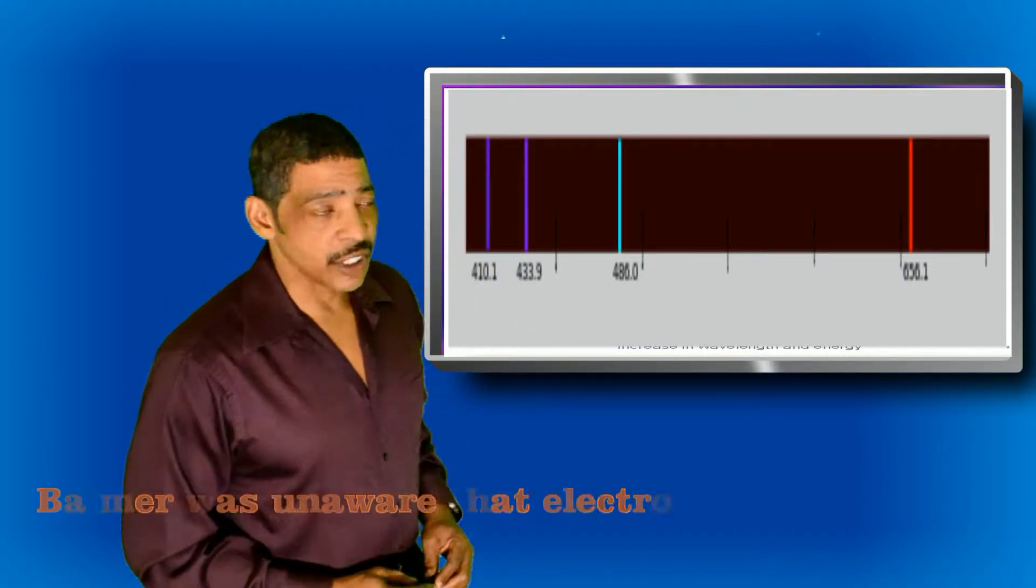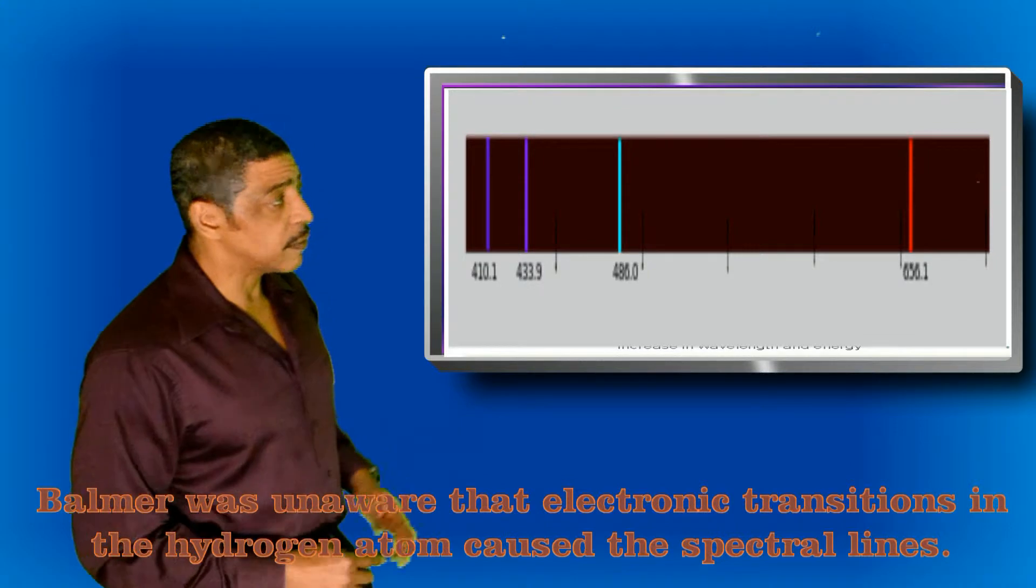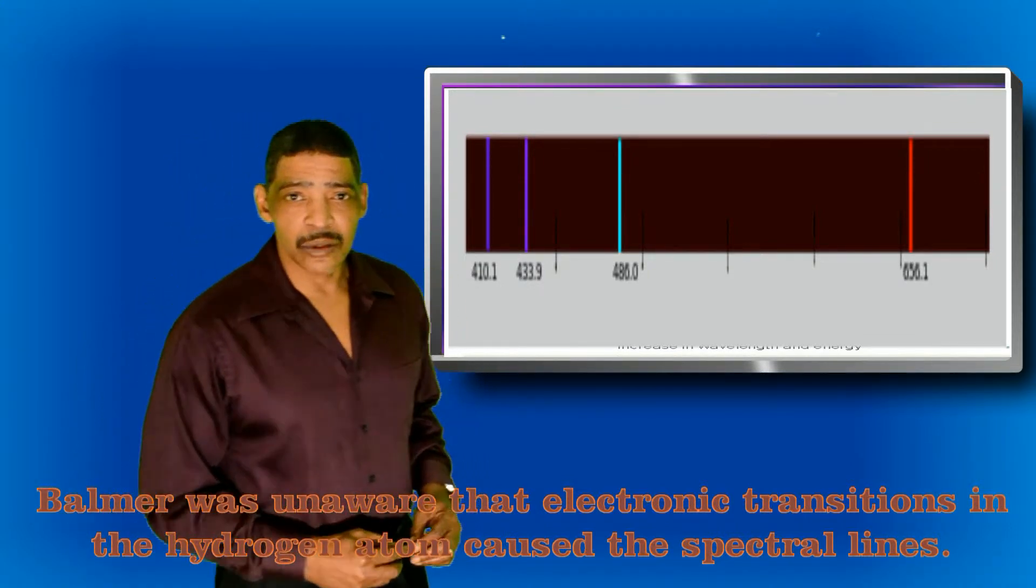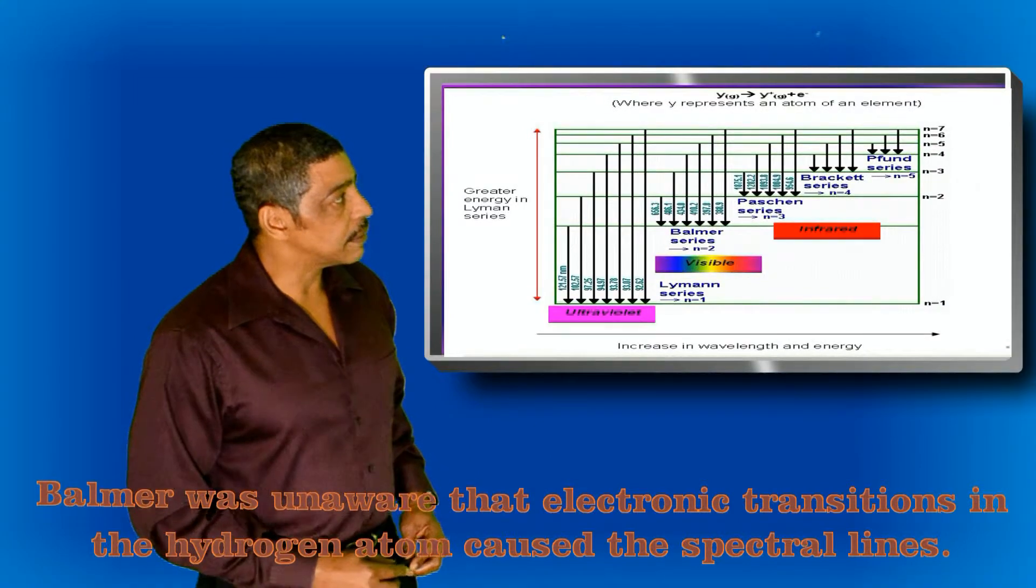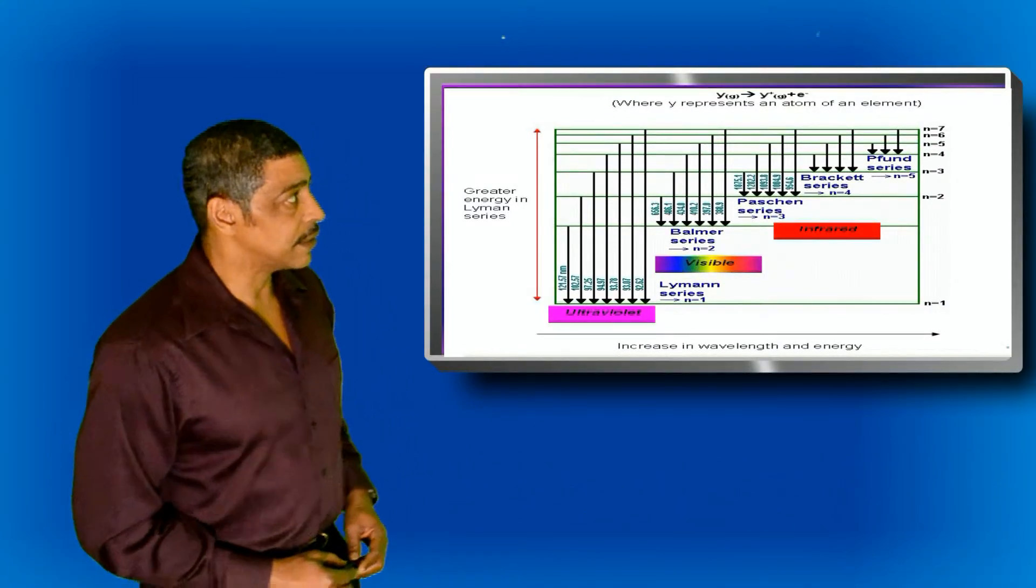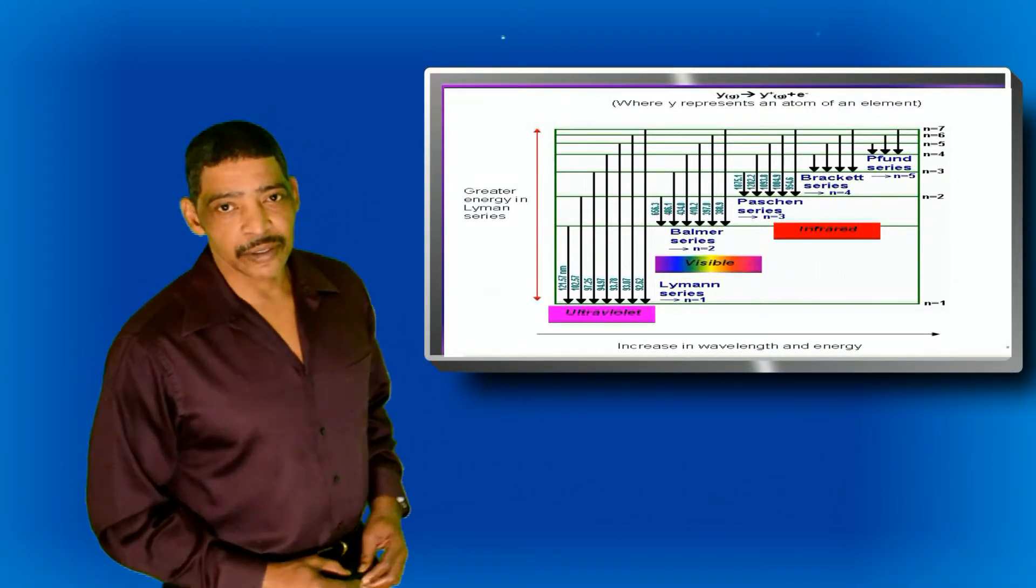Based on his knowledge of mathematics, Balmer was able to generate a formula that explains the visible wavelengths in hydrogen's bright line spectrum at 410, 434, 486, and 656 nanometers.